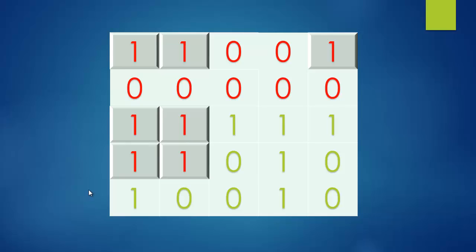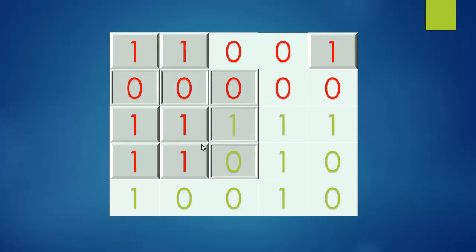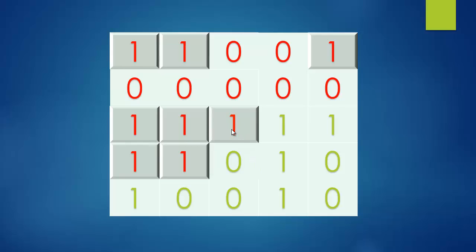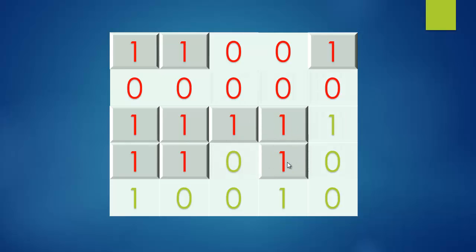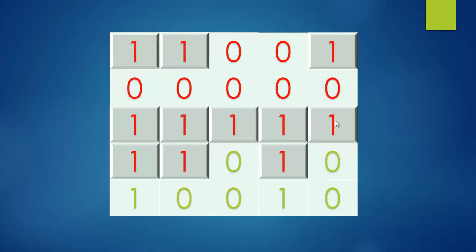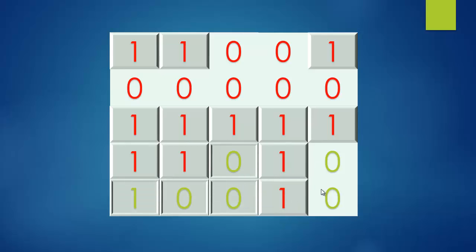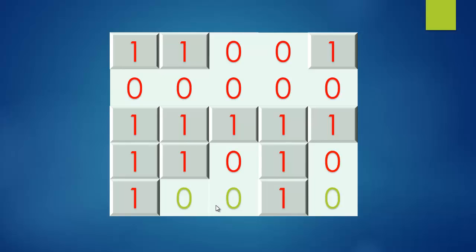You can imagine this as one node branching into three different instances of the same function. Each instance checks what is around it — zeros are ignored, visited cells are ignored, and ones trigger further recursive calls. The call stack resolves in order: one branch finishes, returns, and the next branch picks up. Zeros are eliminated one after the other until all reachable ones are visited.